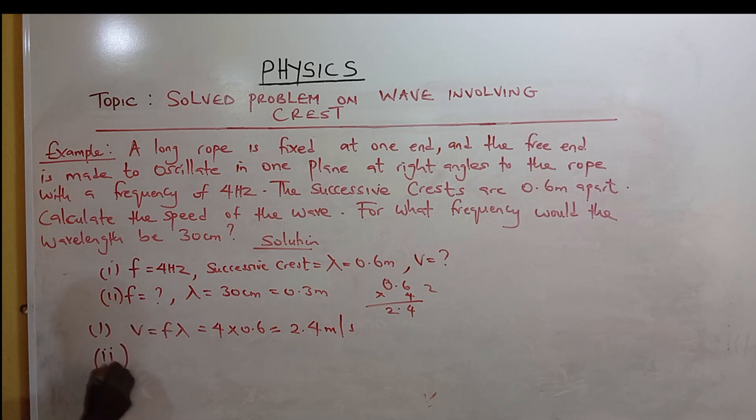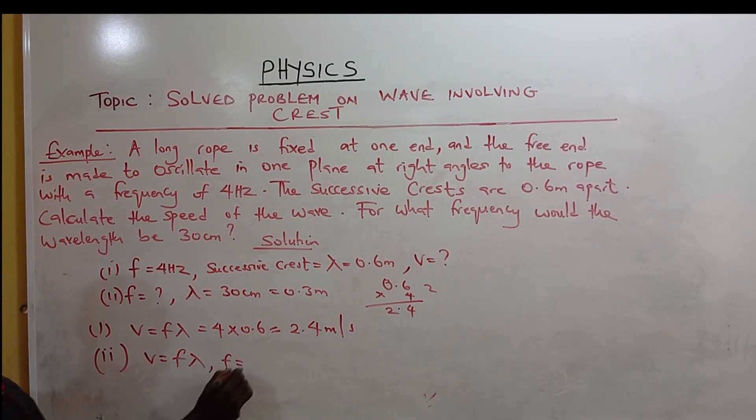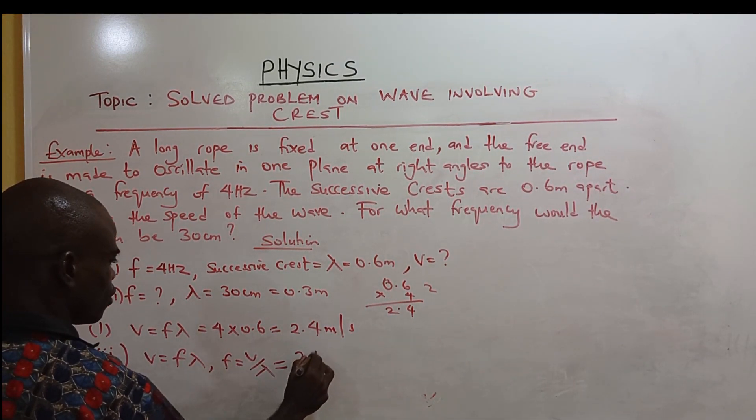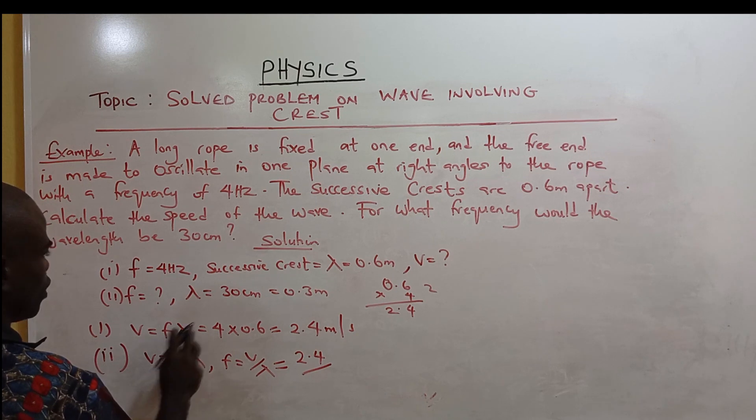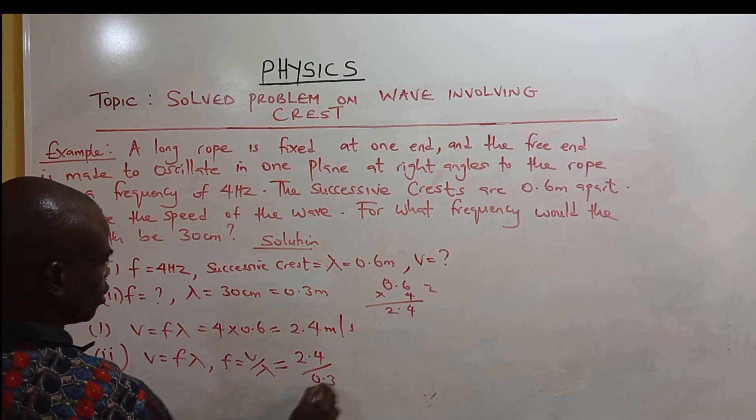For frequency, we remember that V equals F times lambda. Frequency equals V over lambda. We are given V to be 2.4, wavelength over 3.